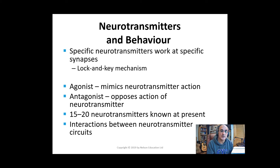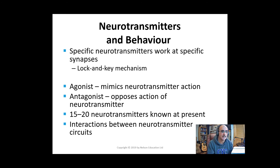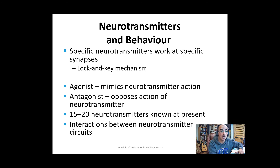Some drugs mimic neurotransmitters, fitting into receptor sites so perfectly that the site is fooled and a post-synaptic potential is set up — these chemicals are called agonists. Other chemicals oppose the action of the neurotransmitter; they bind to the receptor site but don't fit well enough to activate it — they simply block the site, and are called antagonists. We currently know of about 15 to 20 substances that qualify as neurotransmitters, and most aspects of behavior are probably regulated by many interacting neurotransmitters.